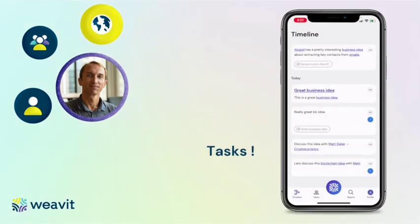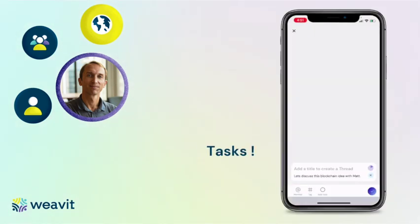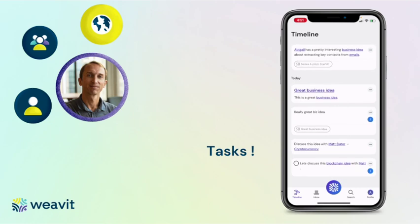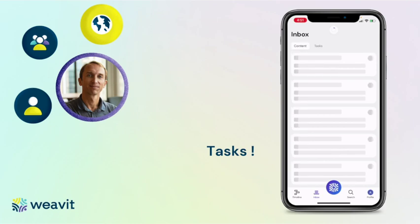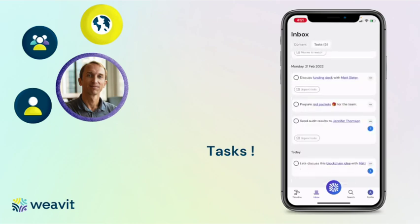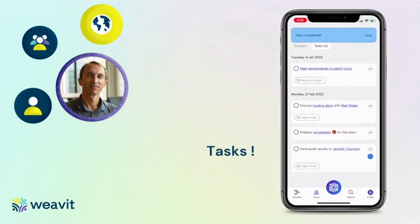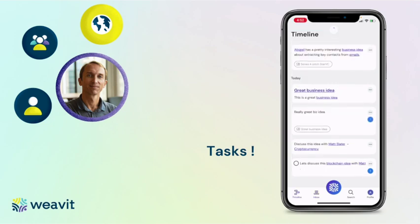That last card could also be seen as a task — 'I want to discuss this idea with Matt.' I can simply add it as a task, and it's now recorded as a task. I can see all my tasks in my inbox. I see the last one: 'Let's discuss this blockchain idea with Matt.' When it's done, I tap on it and it disappears from the inbox. But it's still in the timeline, where everything created is always there, and you can always retrieve it with the time axis.